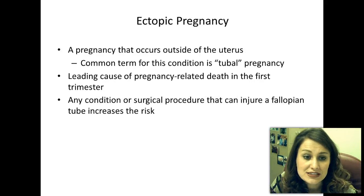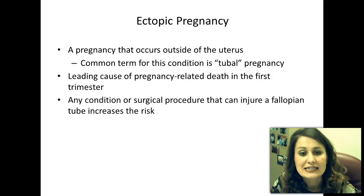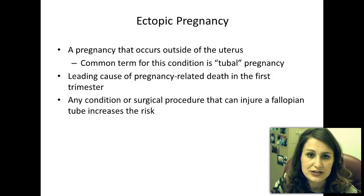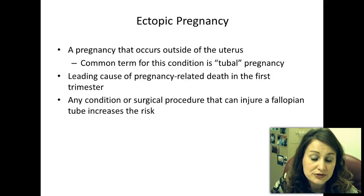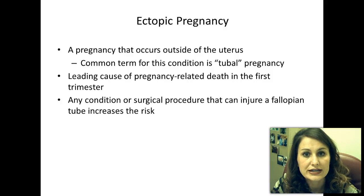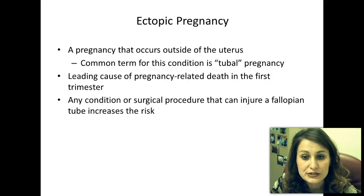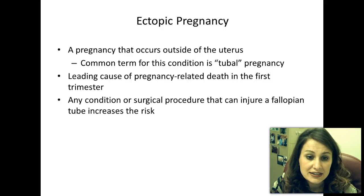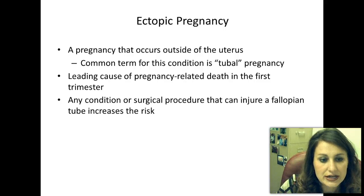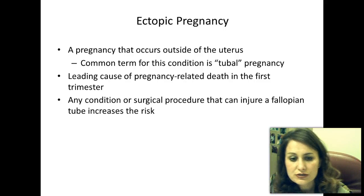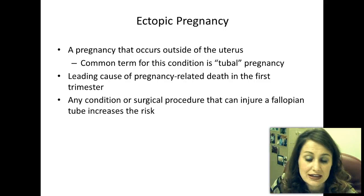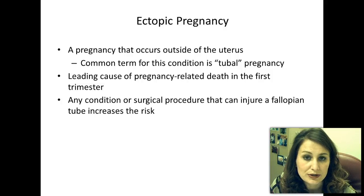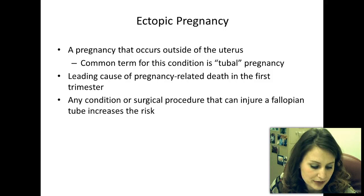Ectopic pregnancy is a pregnancy that occurs outside the uterus. The most common location is the fallopian tube, so it is called a tubal pregnancy. It is the leading cause of pregnancy-related death in the first trimester. Any condition or surgical procedure that can injure a fallopian tube puts the woman at higher risk.